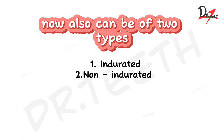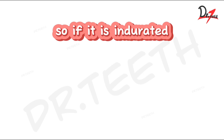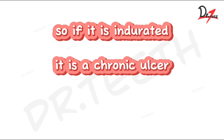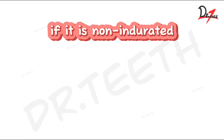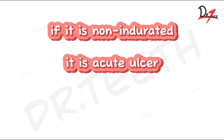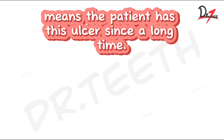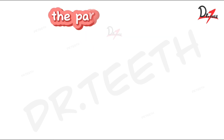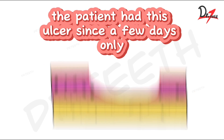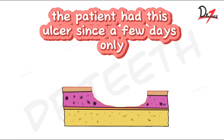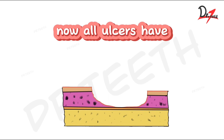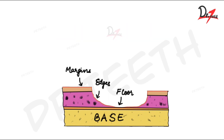Ulcers can be of two types: indurated or non-indurated. If it is indurated, it is a chronic ulcer; if it is non-indurated, it is an acute ulcer. Chronic means the patient has had the ulcer for a long time, and acute means the patient has had the ulcer for only a few days.